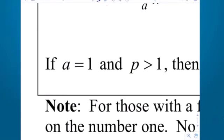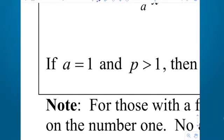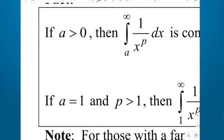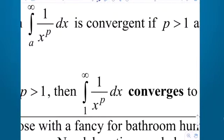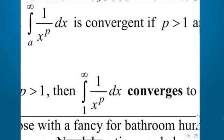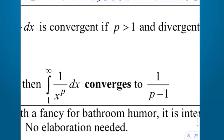There is a special case: if you're starting at 1 — that is, if A happens to be the number 1 — then if your power is greater than 1, it's going to converge. Not only will it converge, you can actually determine to what it converges without finding the antiderivative. It converges to the value 1 over p minus 1.